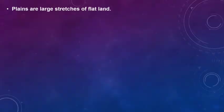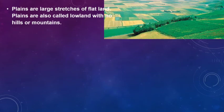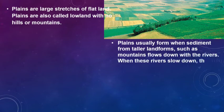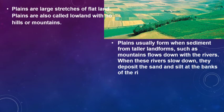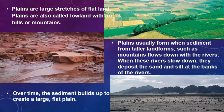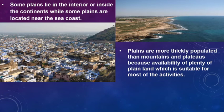Plains are large stretches of flat land, also called lowland with no hills or mountains. Plains usually form when sediment from taller landforms such as mountains flows down with the rivers. When these rivers slow down, they deposit the sand and silt along the banks. Over time, the sediments build up to create a large flat land. Some plains lie in the interior of continents while some are located near the sea coast. Plains are more thickly populated than mountains and plateaus because of the availability of plenty of flat land suitable for most activities.